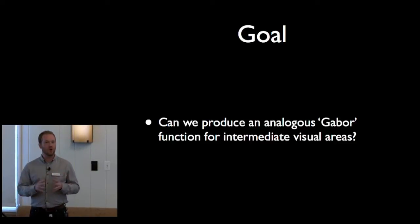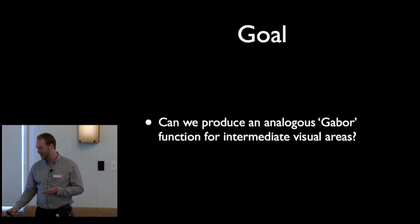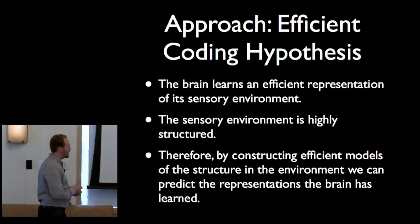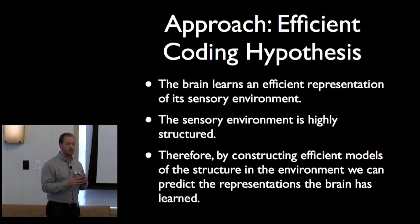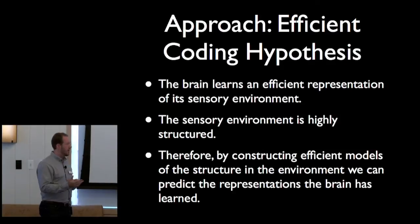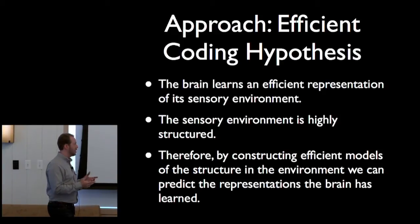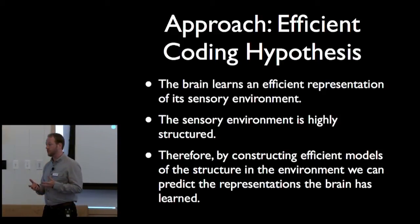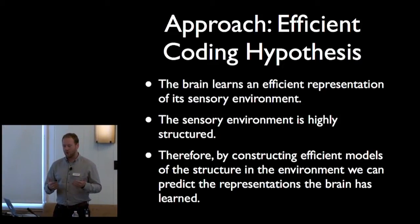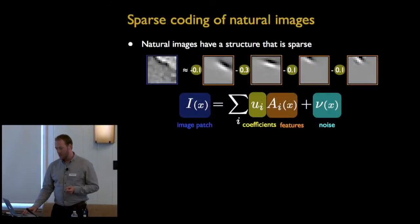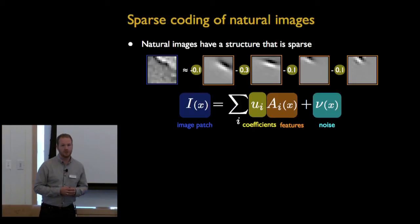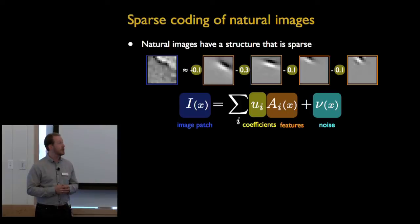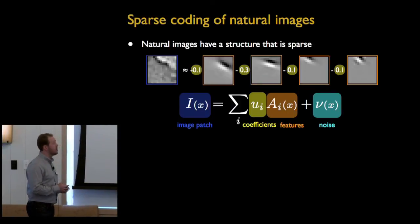This work is with Bruno Olshausen, and naturally the approach we're going to be taking is the efficient coding approach. The basic idea is that the brain learns efficient representations of the sensory environment. The sensory environment is highly structured, and therefore by constructing efficient models of the structure of the environment, we can predict representations that the brain has produced and learned.